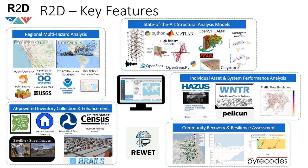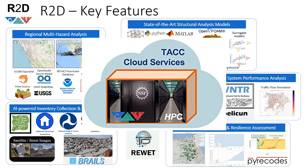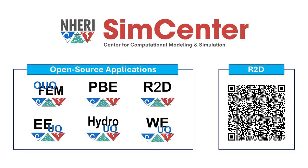R2D is a versatile, one-stop solution for regional natural hazard modeling, and it provides free high-performance computer resources. Why not use R2D to scale up your models and help our communities better prepare for natural hazards?